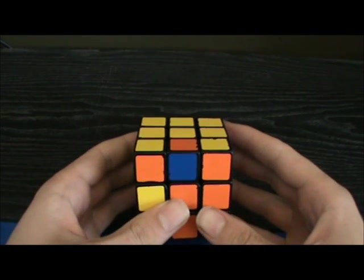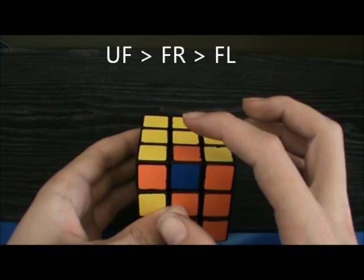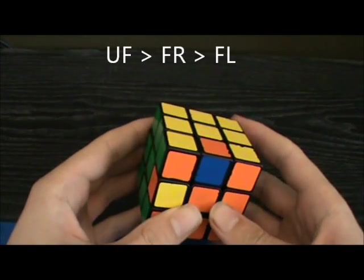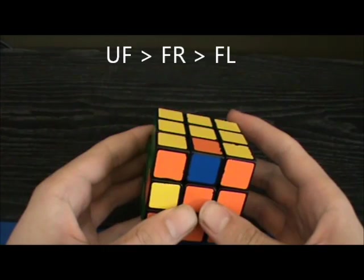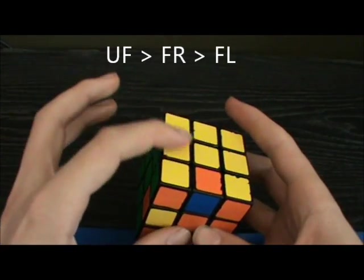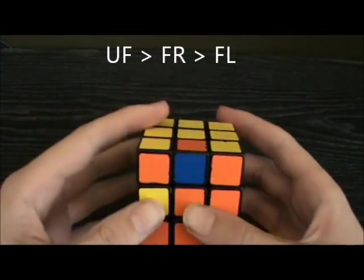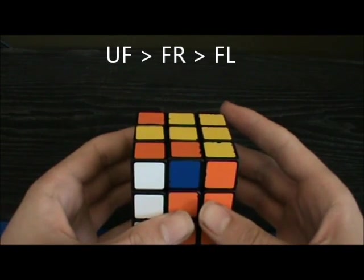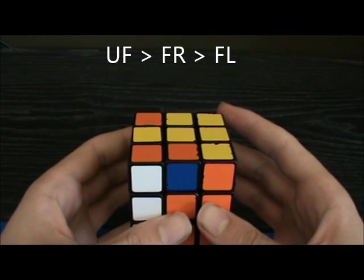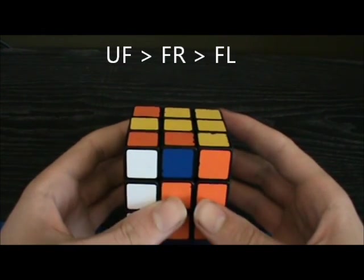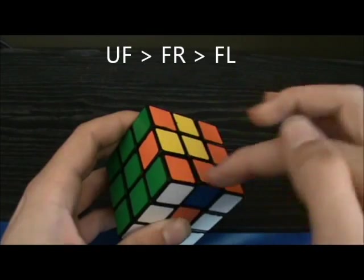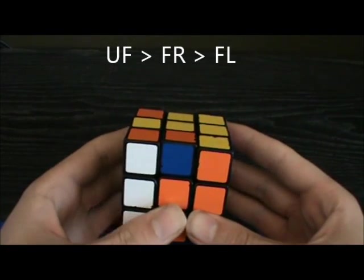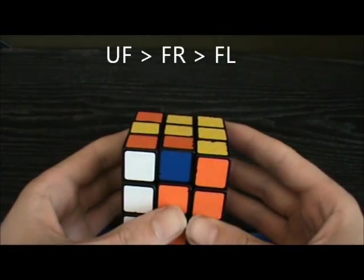Here is the last example of cancellations. UF to FR to FL. Now this time there isn't a target already set up at UL, so FL will have to go there. L'. Again you can break this into three parts. For the first part, this U perm will be counterclockwise as you can see. The counterclockwise U perm starts with R, so I am going to do R2.